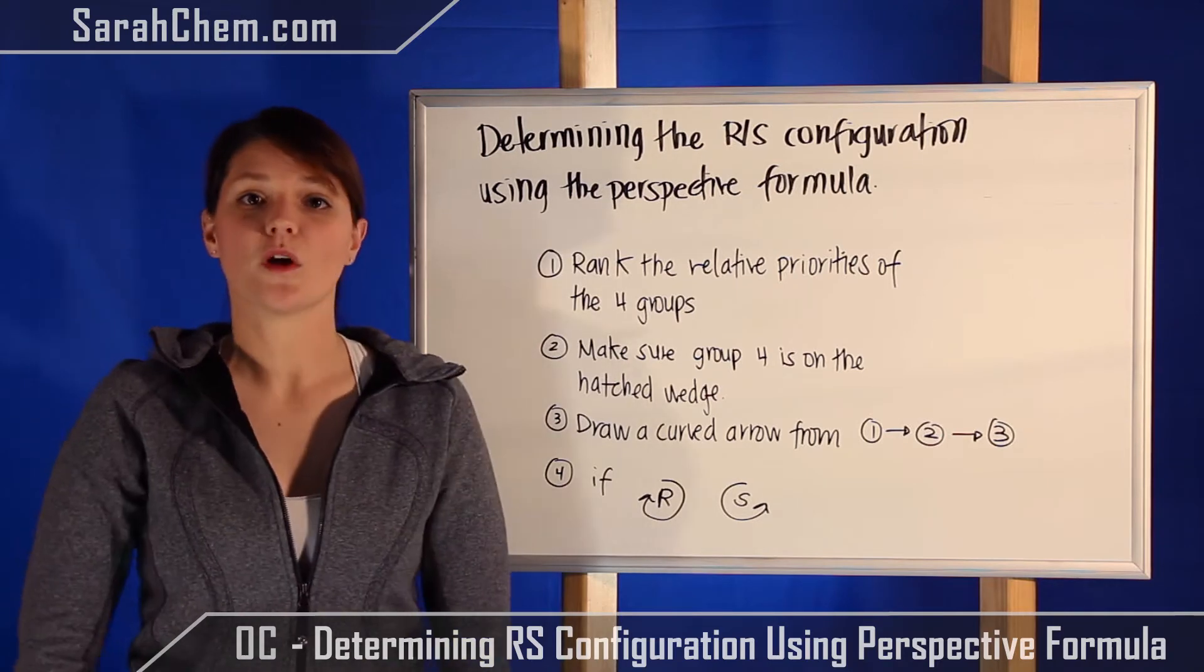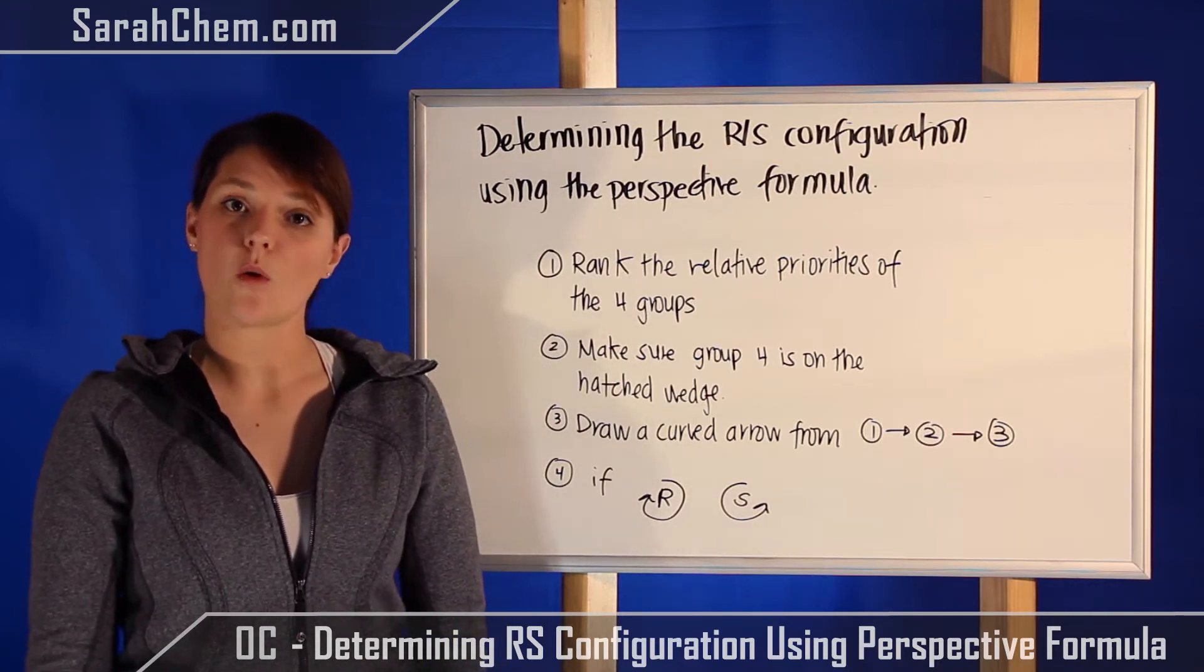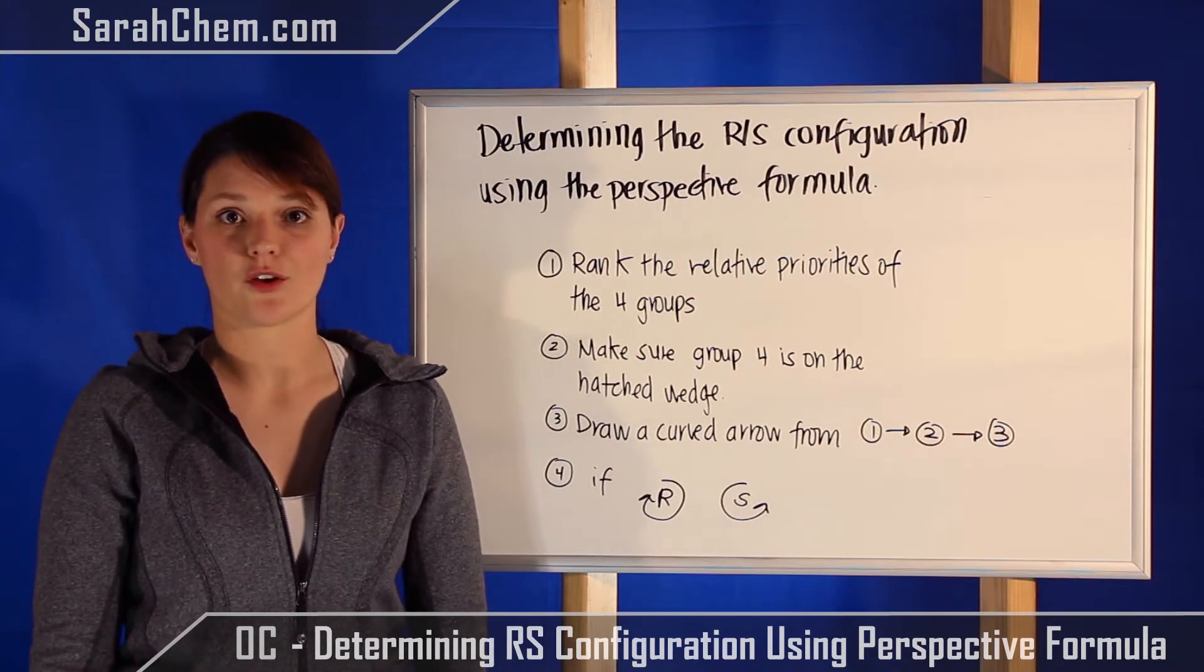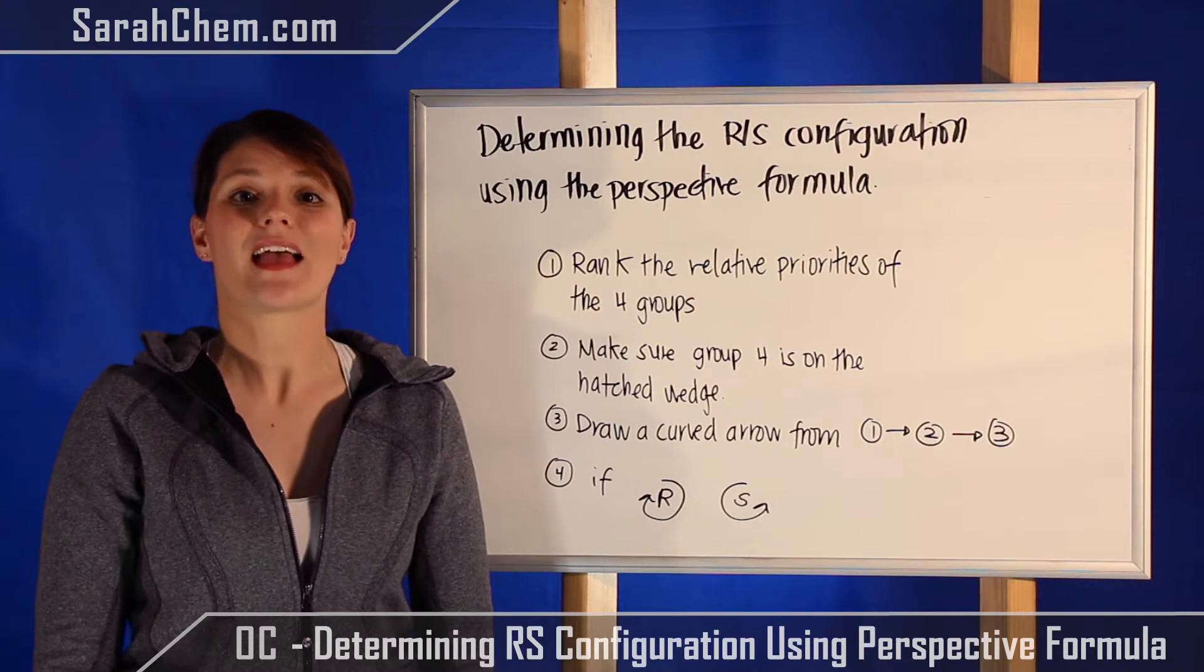And the fourth thing is once you've drawn your curved arrow, if you find that your arrow is moving in a clockwise direction you have an R configuration, and if you're moving in a counterclockwise direction then you're dealing with the S configuration.